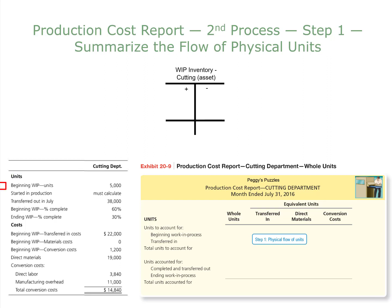Notice we have 5,000 units in the beginning work in process in this department at the beginning of July. This means at the end of the previous period — June — we had 5,000 incomplete puzzles on June 30th for this department. We're going to complete these puzzles in July. In our T-account, we place the beginning units here.